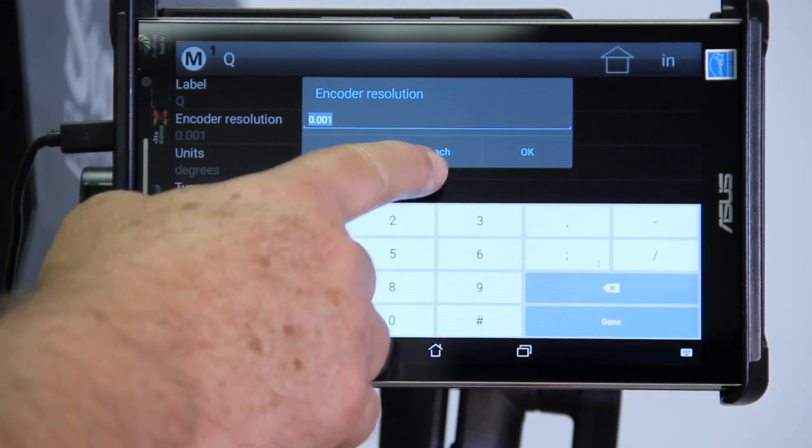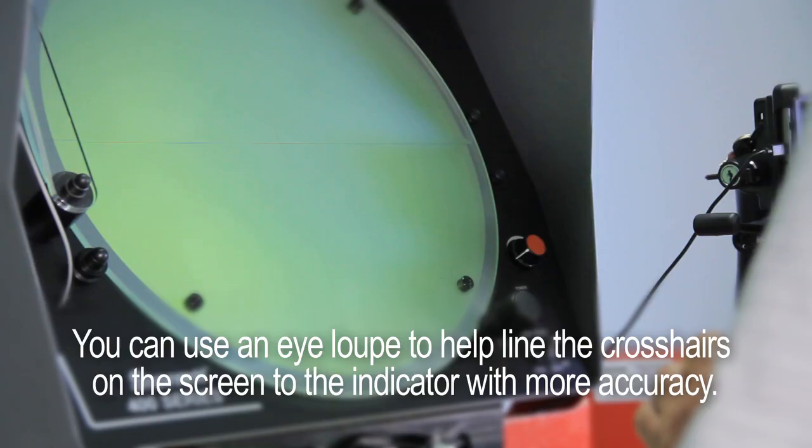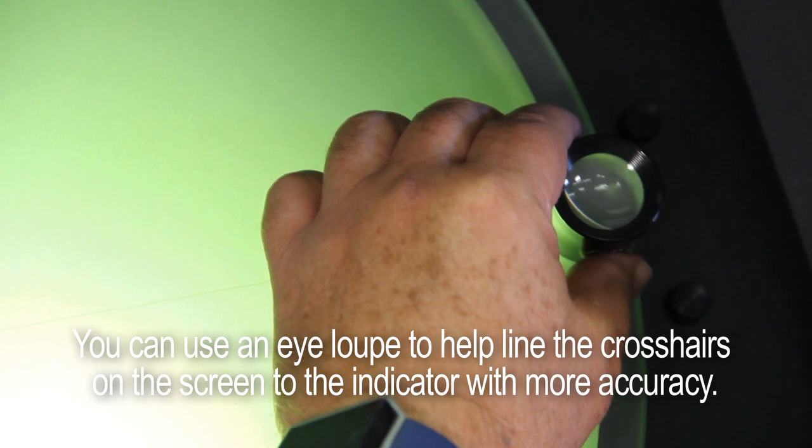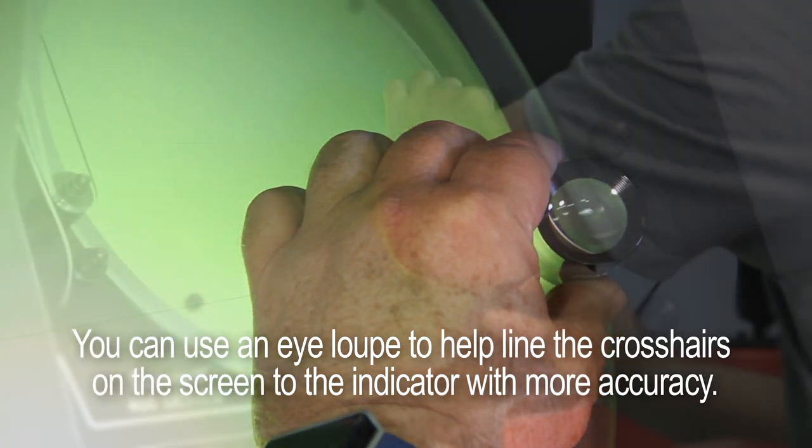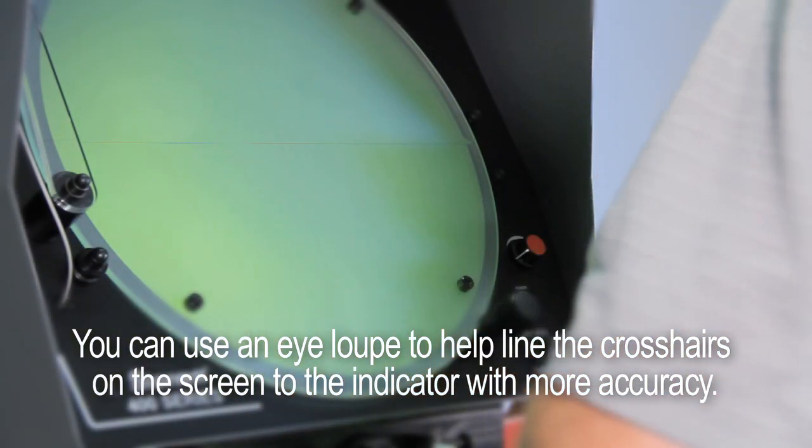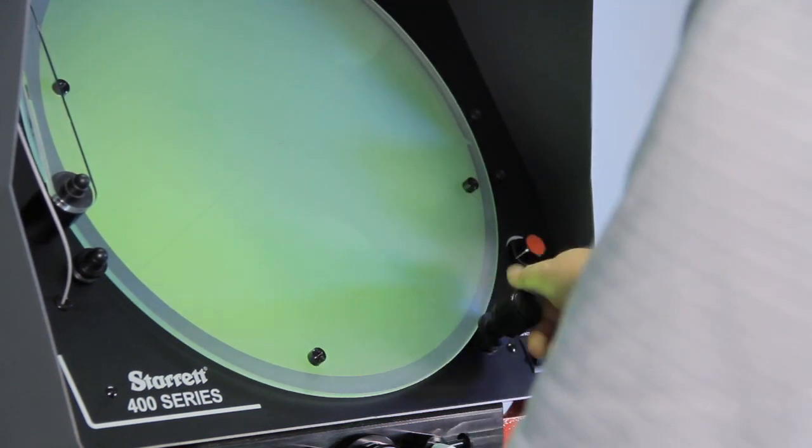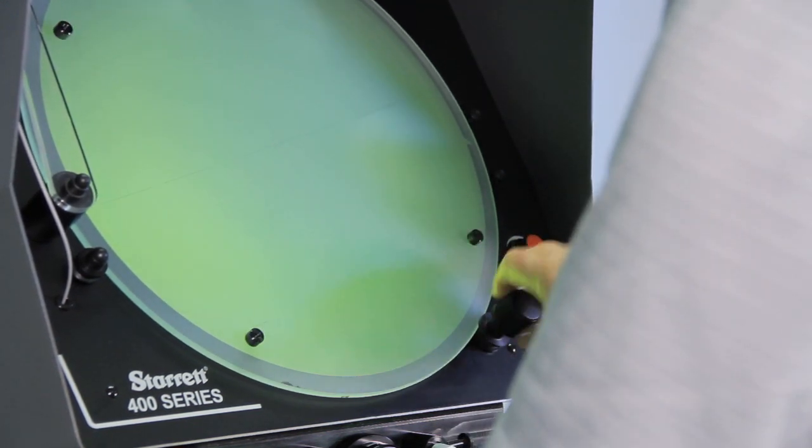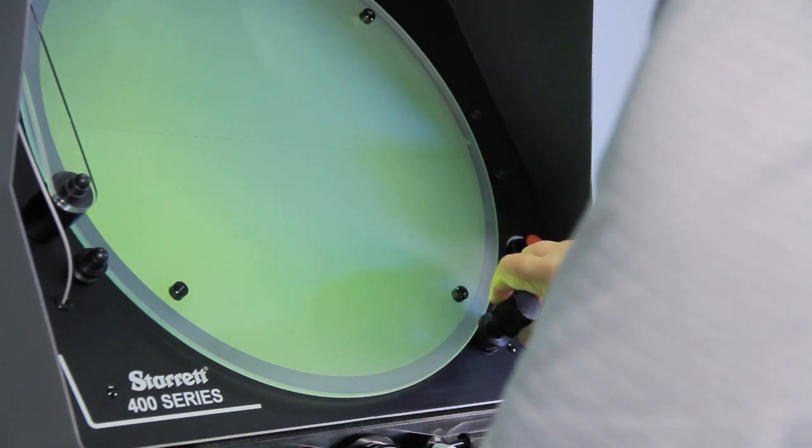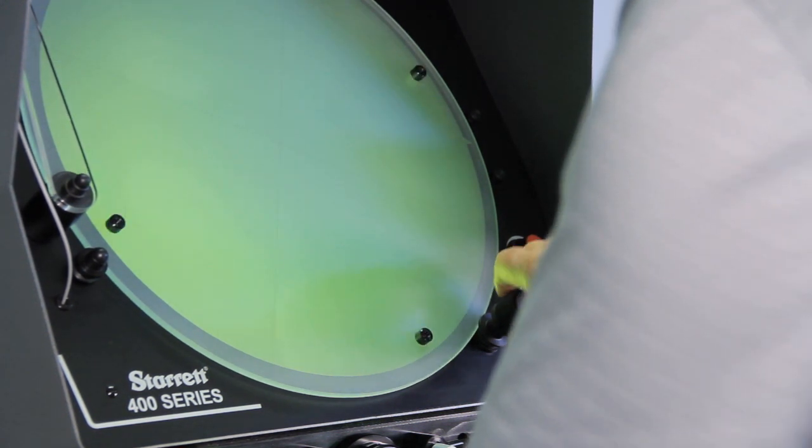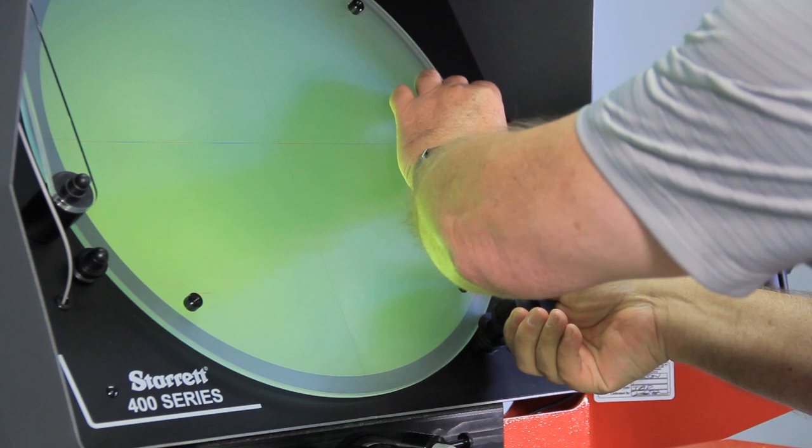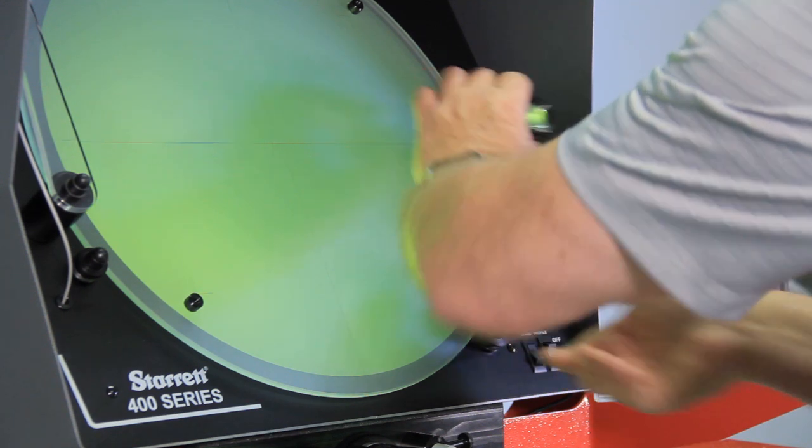Push the button to start the teach. Make sure you have your crosshairs lined up. Push the button to start the teach. Rotate the screen 360 degrees. Then hit done.